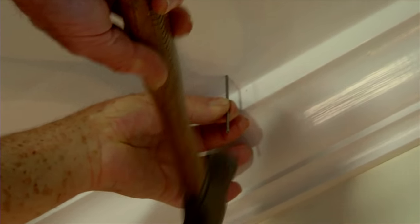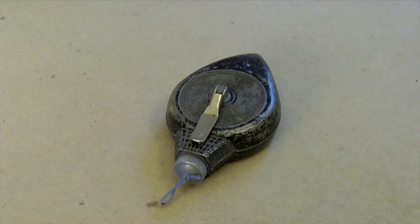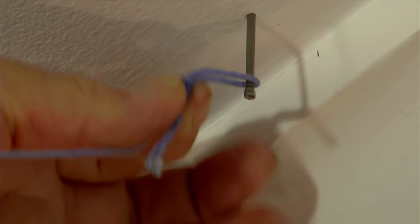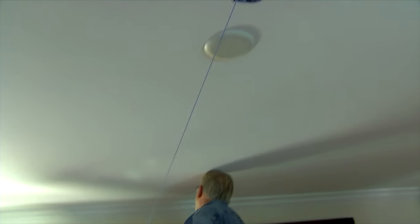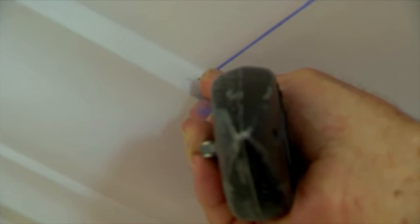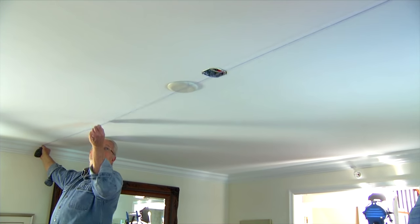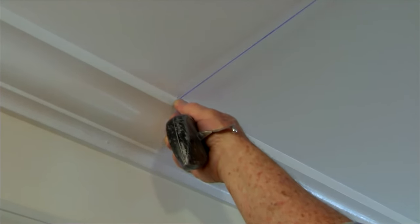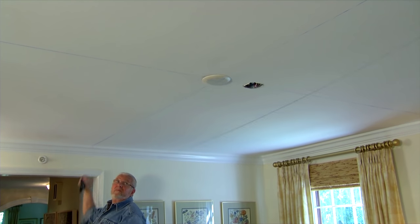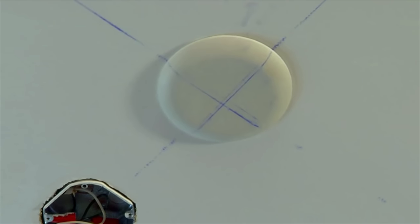Next, I drive in a small finish nail on the mark, loop one end of a chalk line over the nail, move to the opposite wall, locate the center mark there, pull the line taut and snap. I repeat the process for the remaining two walls. The point where the two chalk lines cross is the exact center of the ceiling.